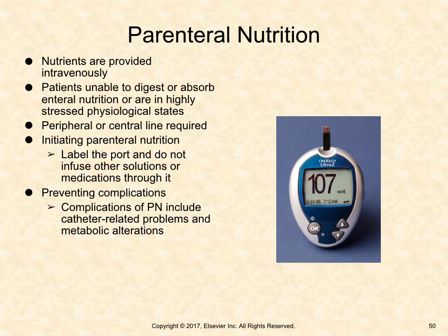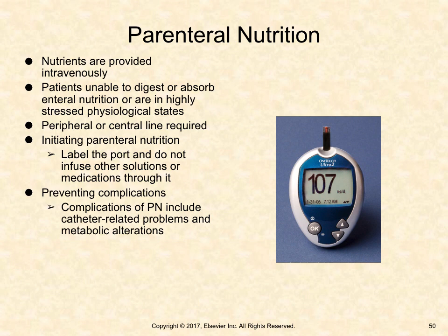Parenteral nutrition refers to nutrients provided intravenously. This is appropriate when patients are unable to digest or absorb enteral nutrition or are in highly stressed physiological states, though the goal to move toward use of the gastrointestinal tract is constant. Parenteral nutrition with greater than 10% dextrose requires a central venous catheter placed into a high-flow central vein such as the superior vena cava under sterile conditions. Parenteral nutrition with less than 10% dextrose can be administered via a peripheral line. Complications include catheter-related problems and metabolic alterations.